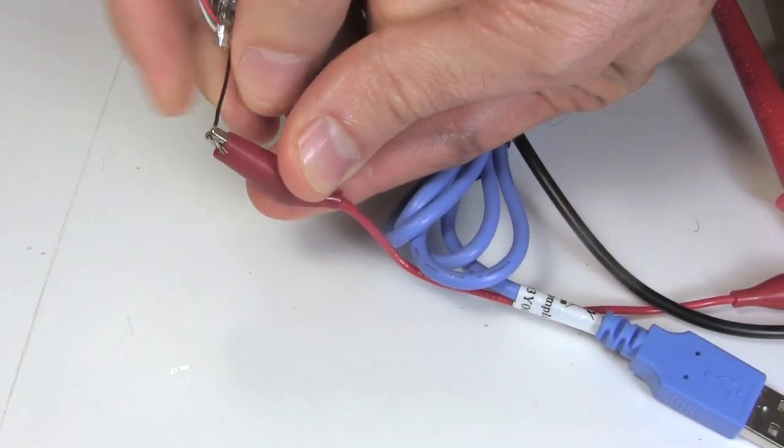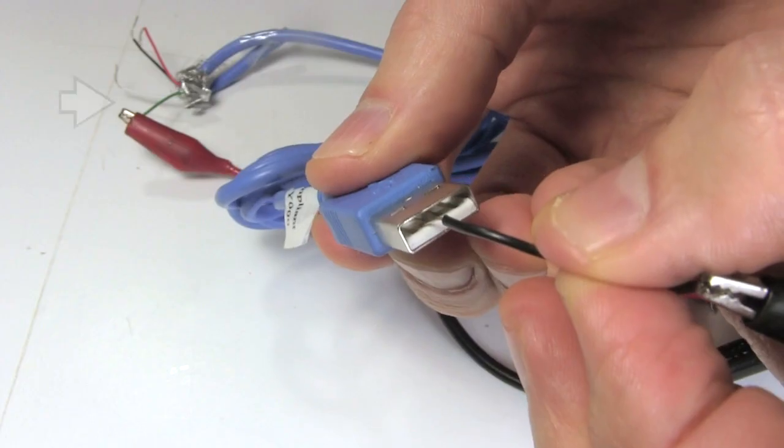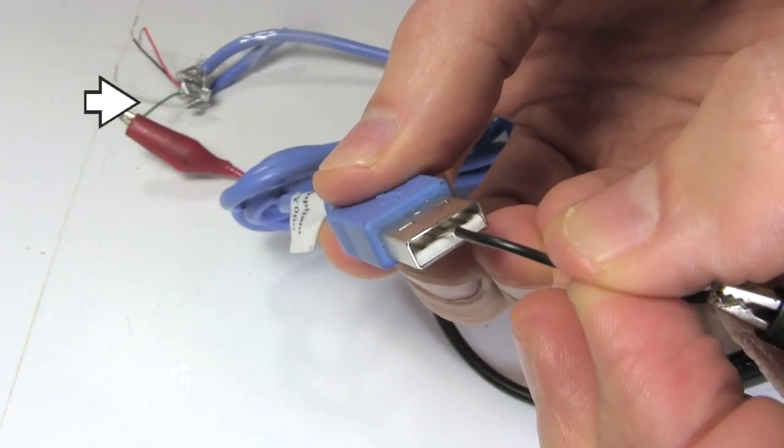I switch to the black wire and get a beep with the other power pin. The white wire causes one of the data pins to beep, and the green wire causes the other data pin to beep.